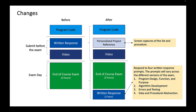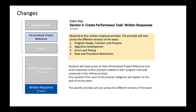The written response will ask four questions, each question from the four prompt categories. The specific prompts will vary across the different versions of the exam. And here are the four: one, program design, function, and purpose; two, algorithm development; three, errors and testing; four, data and procedural abstraction.